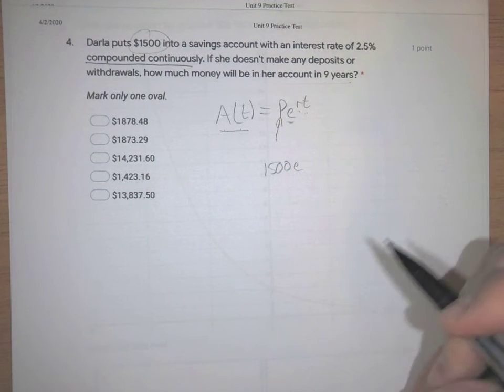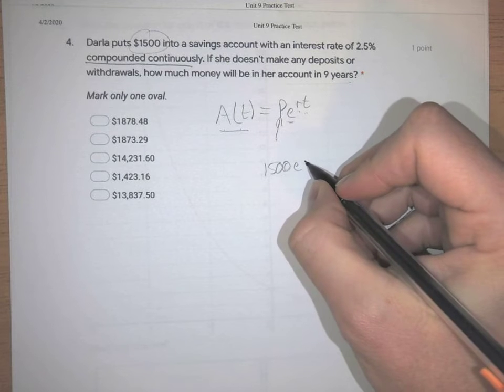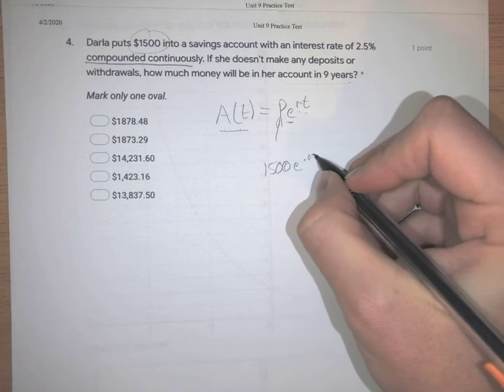E is a number, an irrational number that is stored in your calculator that we're going to use. R as a decimal is .025.